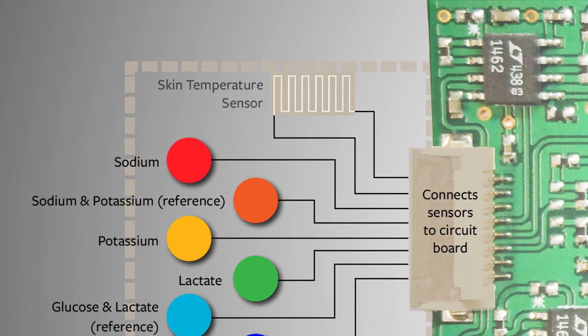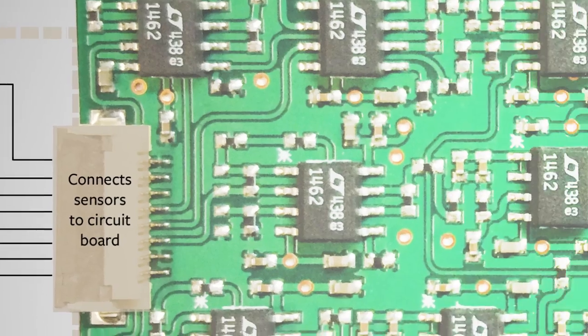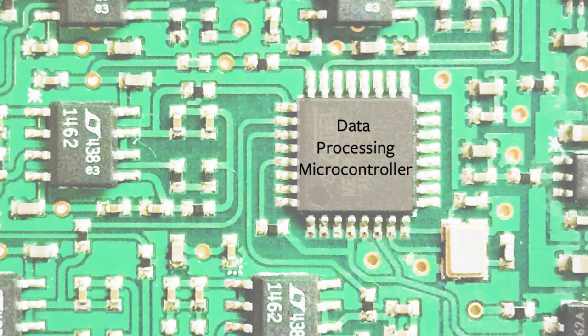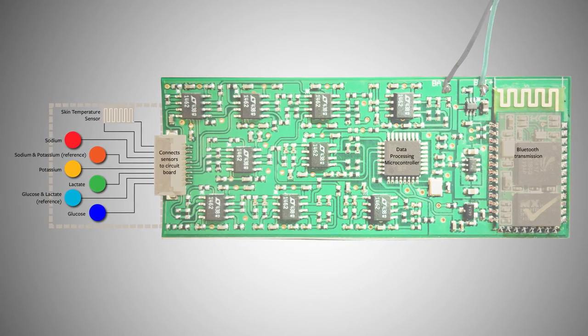As your skin temperature changes, the output of the sensor changes. As part of this electronic board, we do have a processor chip, effectively a computer, that can simultaneously correct for this temperature change.